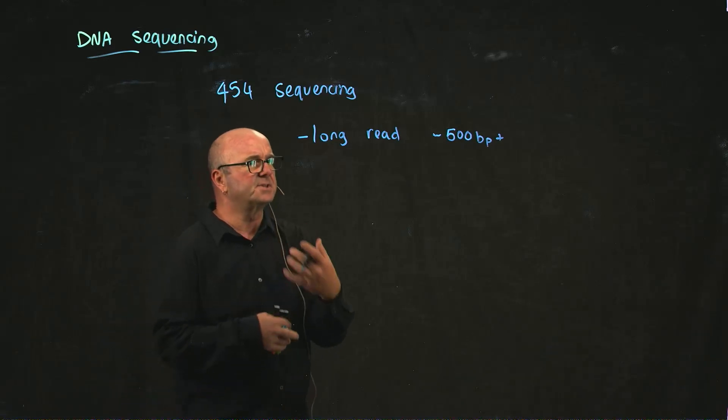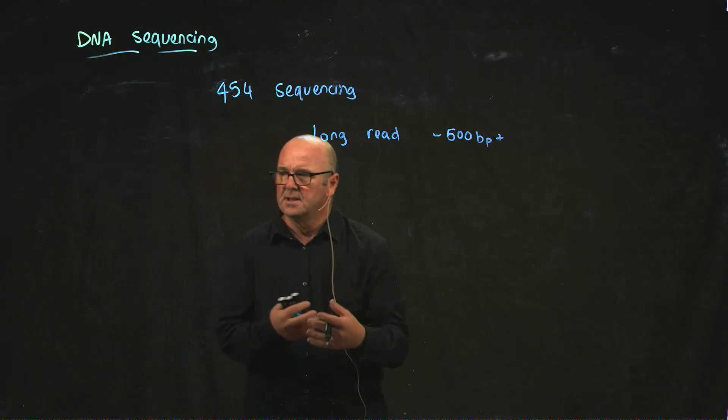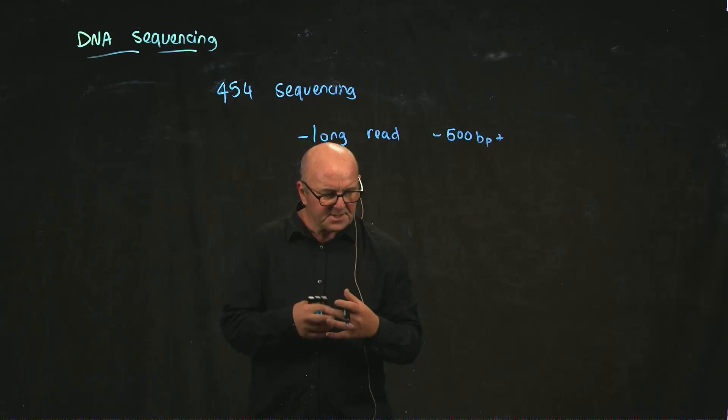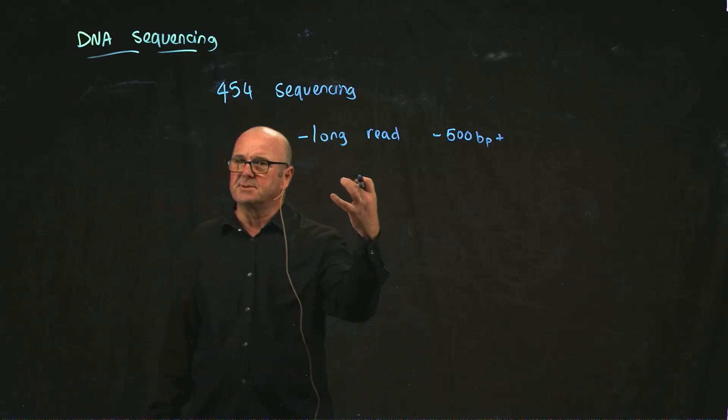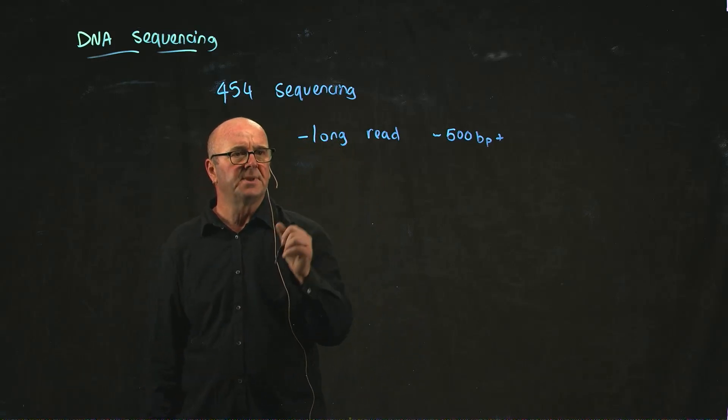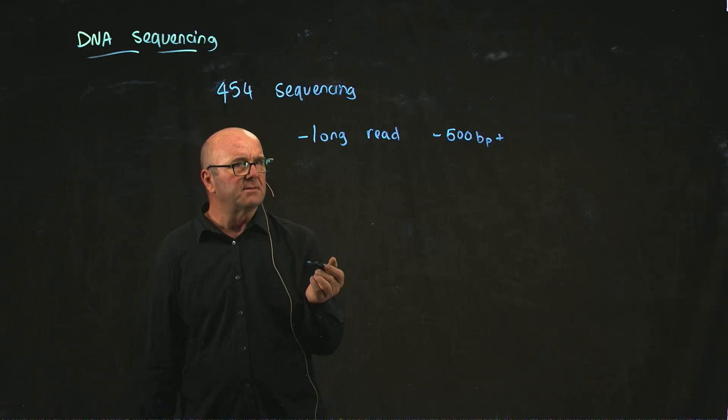Through changing the technology, changing the enzymes, and changing the reagents they used, they got it from 50 bases up to about 500 bases. So it was relatively long read.